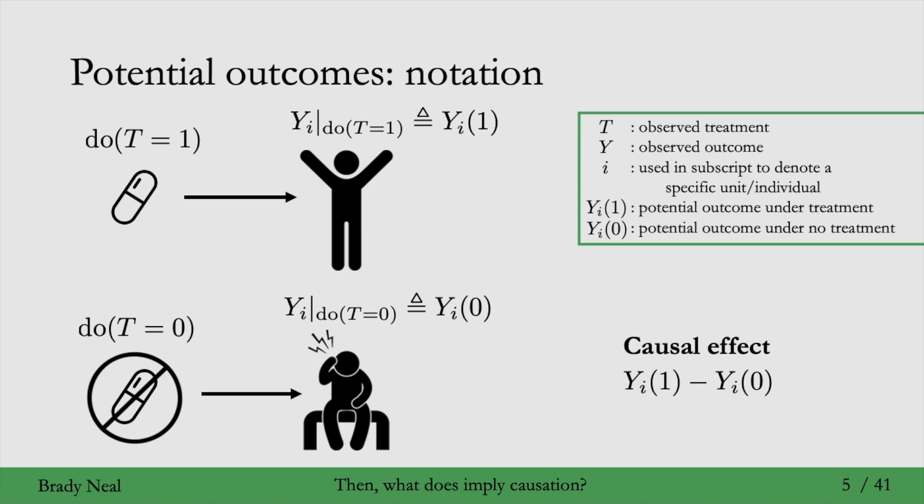Then we can define the causal effect as the potential outcome under treatment minus the potential outcome under no treatment. YI(0) equals zero in this case, which means I still have the headache—that's the potential outcome if I were to not take the pill. If I were to take the pill, YI(1) equals one means I would not have a headache. One means no more headache, zero means headache. Then my causal effect would be one. One minus zero is one.